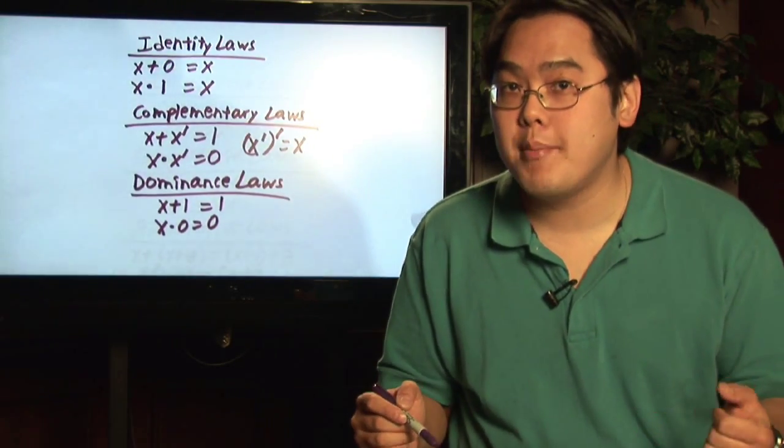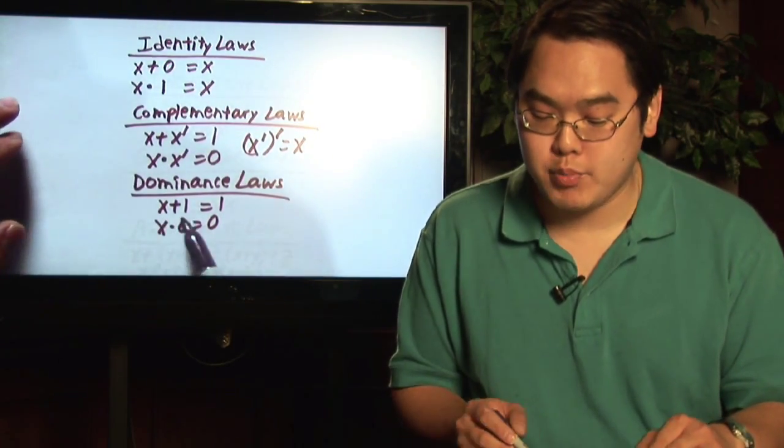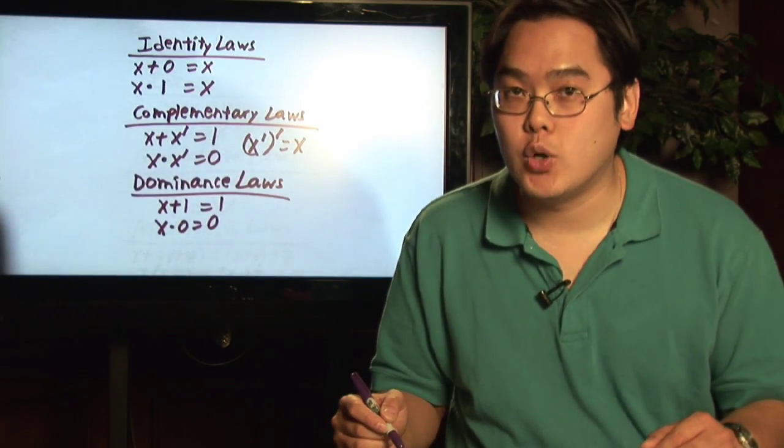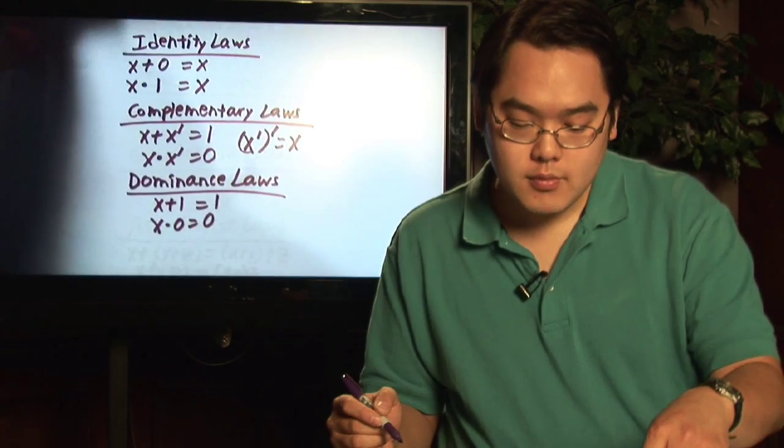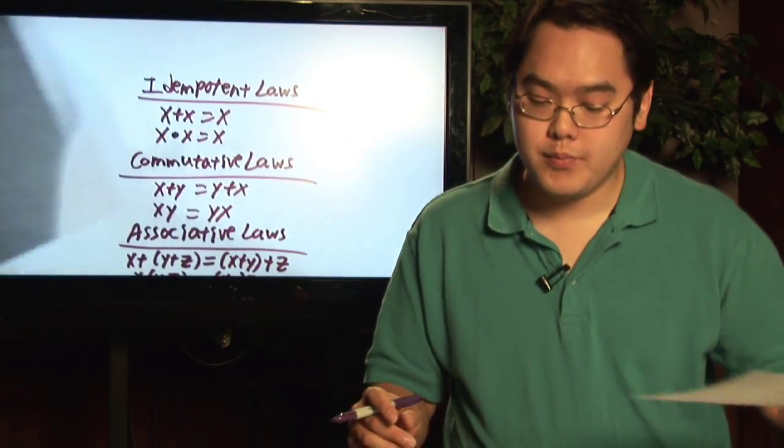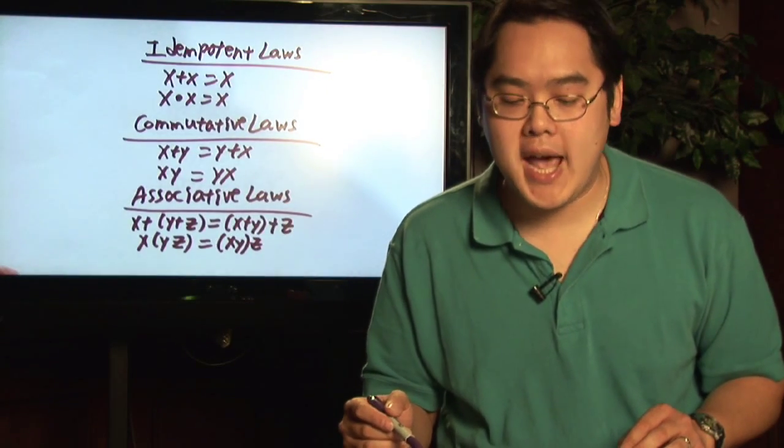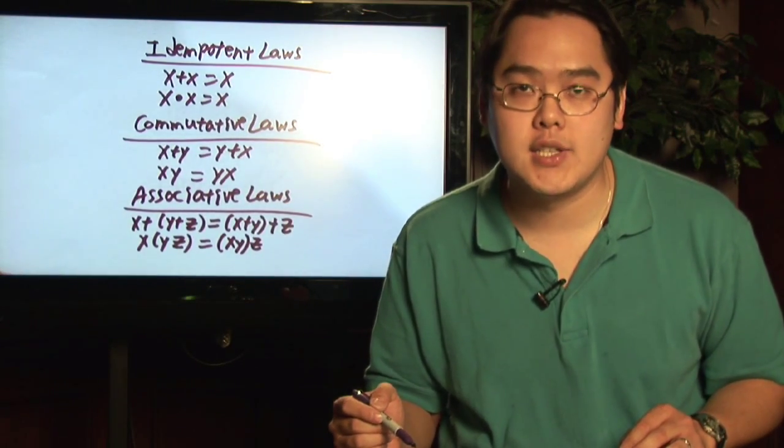Now we have the so-called dominance laws, which talk about X plus one is equal to one and X times zero is equal to zero. We then move to the idempotent laws where you have X plus X is equal to X and X times X is equal to X.